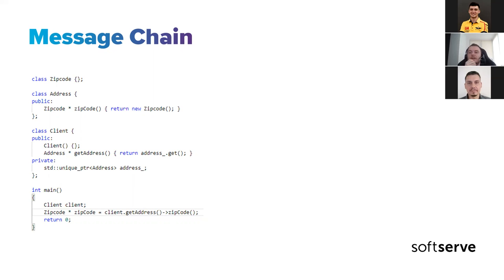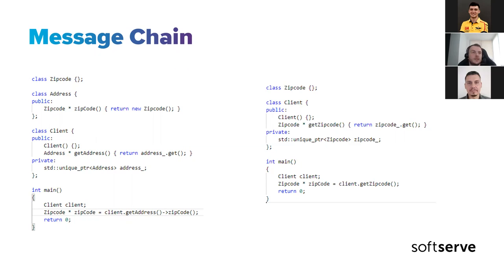Before fixing this issue, the correct solution depends on what we use it for. Data can be hierarchical by nature, so a message chain doesn't necessarily mean a problem when we want to access data at different levels of granularity. One possible fix, depending on your exact needs, is to get rid of the Address class entirely if it's not really needed in the chain, or to keep it as a middleman intentionally.